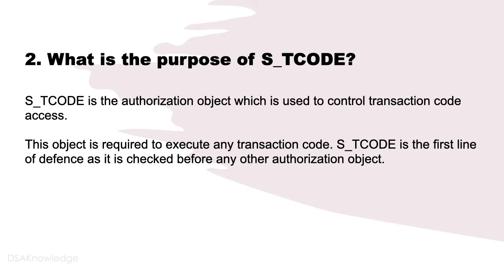What is the purpose of S_TCODE? S_TCODE is the authorization object which is used to control transaction code access. This object is required to execute any transaction code. S_TCODE is the first line of defense as it is checked before any other authorization object.